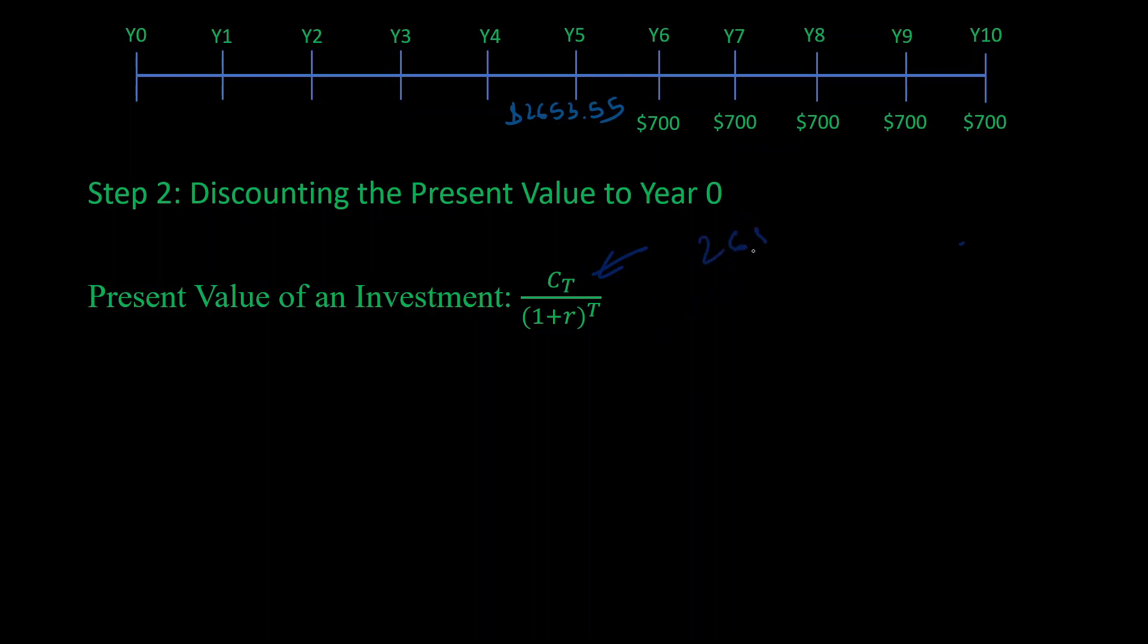So we get 2,653.55 / (1 + 0.1)^5. Do all the math again, and the present value of this delayed annuity comes out to be $1,647.64, which is our final solution.